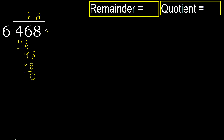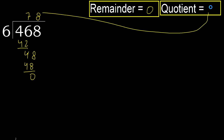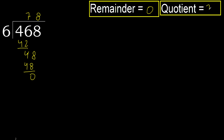Next. There is no remainder, therefore finish. 468 divided by 6 is 78. Thank you.